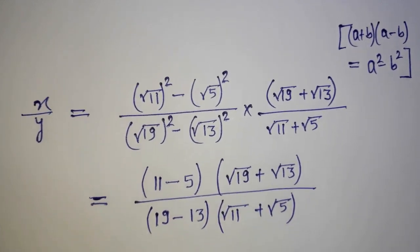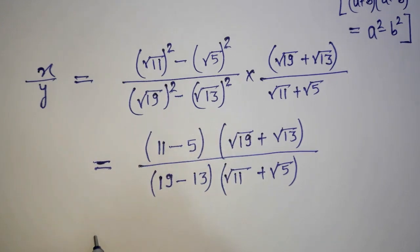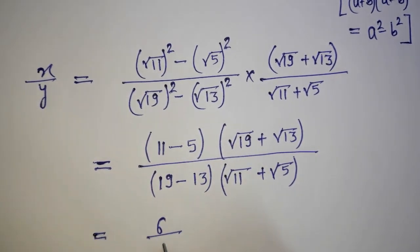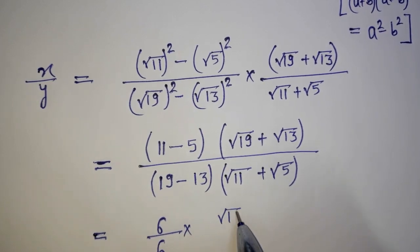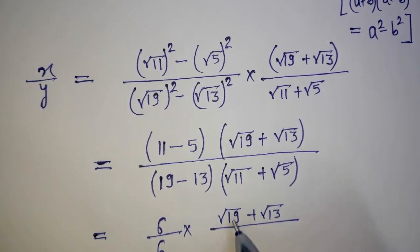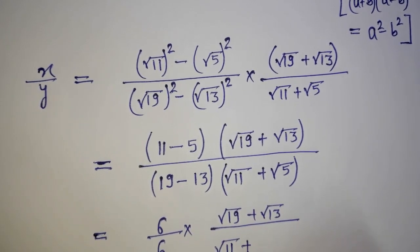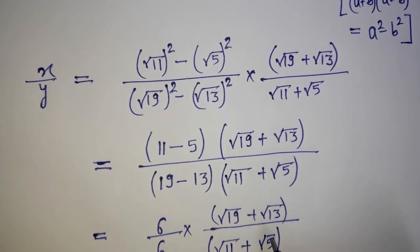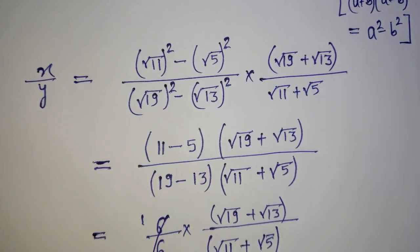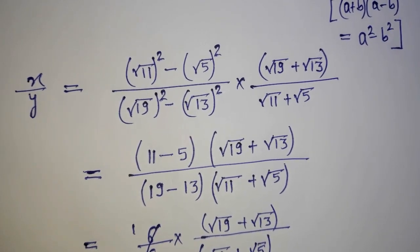So you can see this one is coming 6 and below it is also coming 6. These quantities are equal so the 6's cancel out.